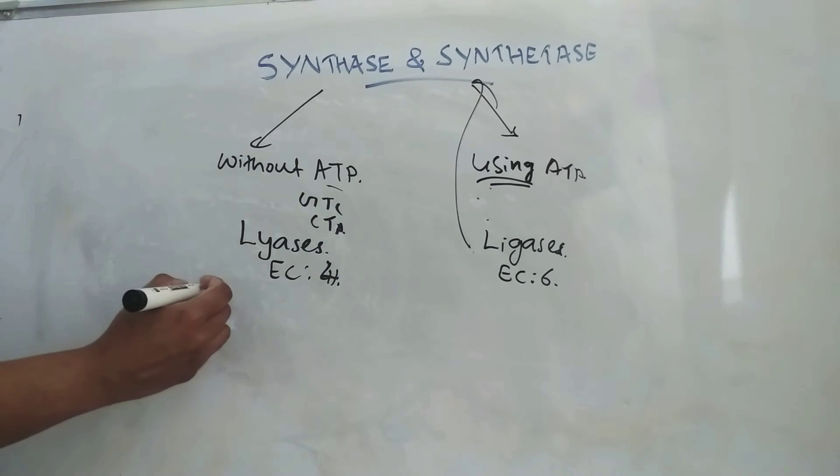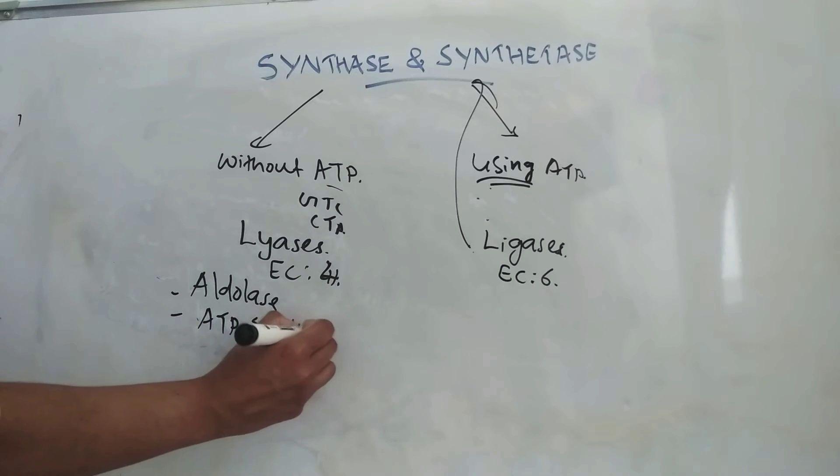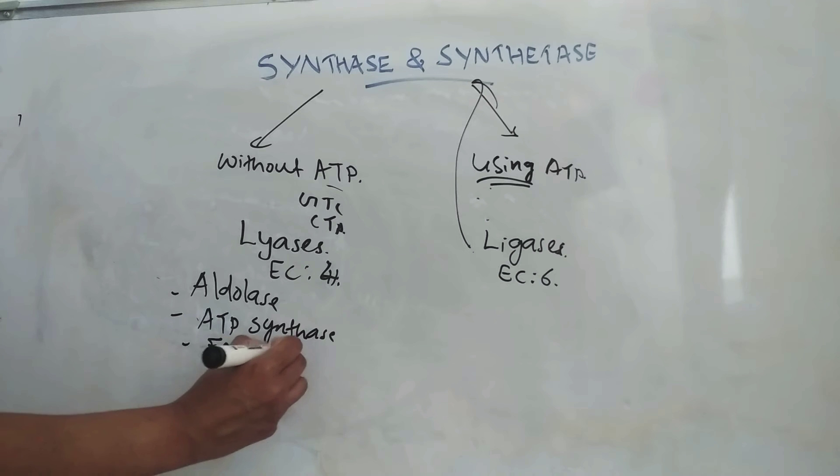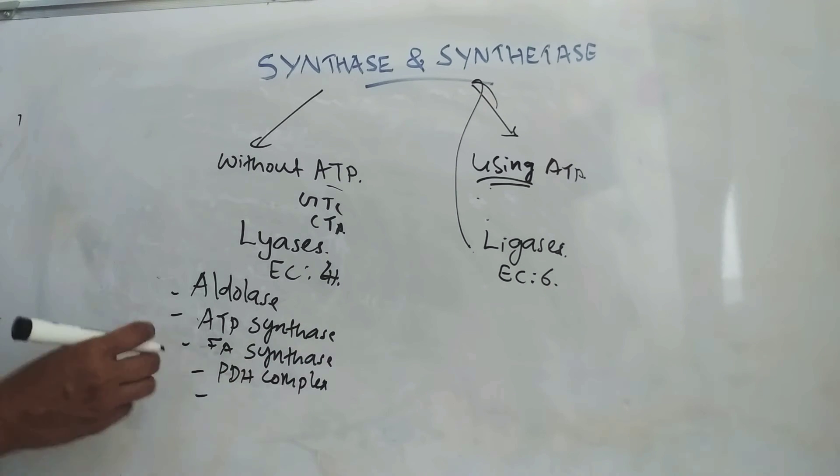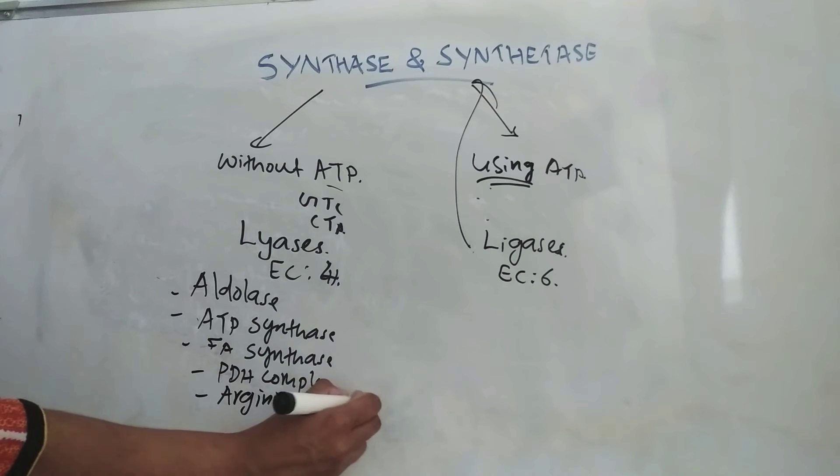We will see examples of synthases. Examples include aldolase, ATP synthase, fatty acid synthase, PDH complex (pyruvate dehydrogenase complex), and arginosuccinate lyase.